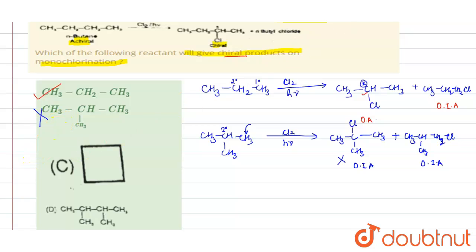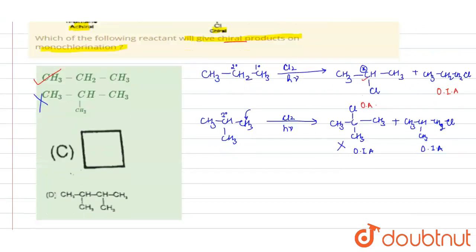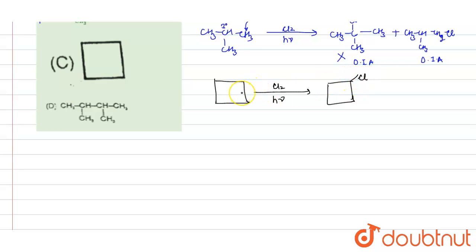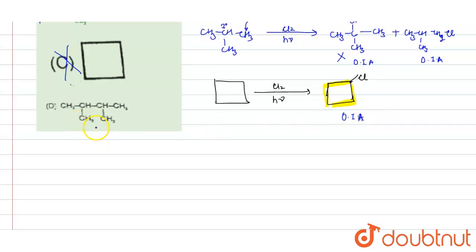The third compound is cyclobutane. On monochlorination, all positions are equivalent so attack can occur at any position giving the same product. Looking at the carbon bearing the Cl, the two sides of the ring are similar — it is not a chiral carbon. So cyclobutane monochlorination also gives an optically inactive compound and does not produce a chiral product.